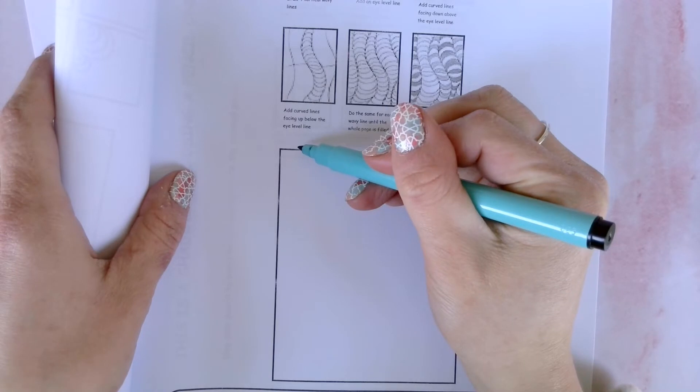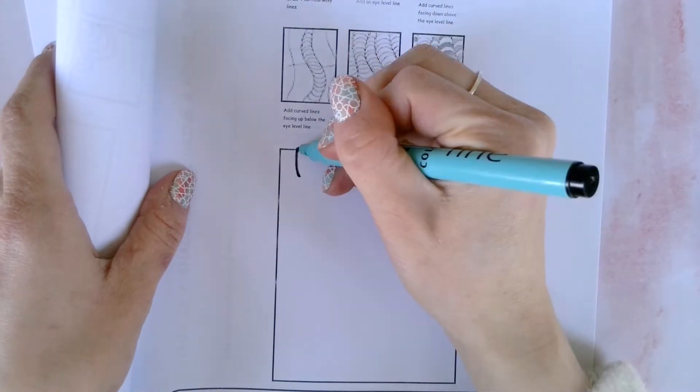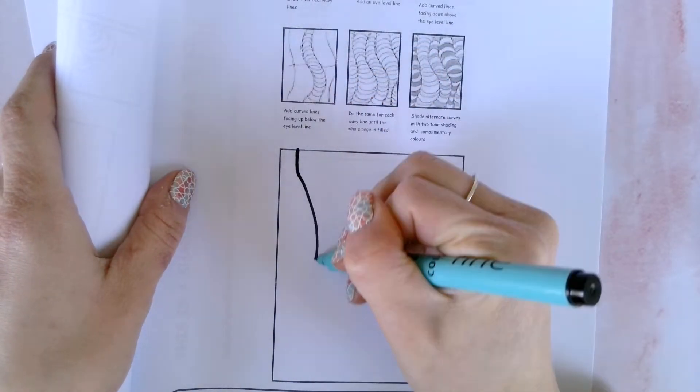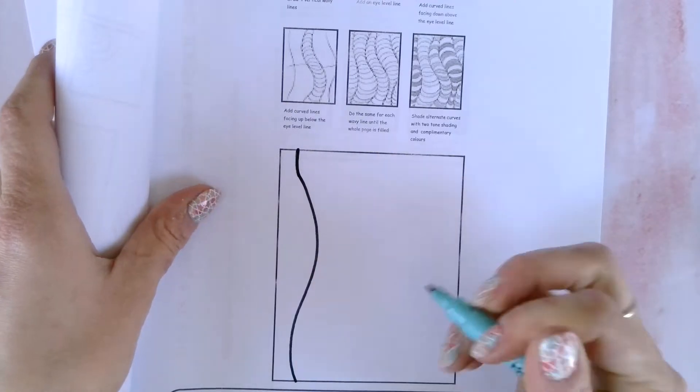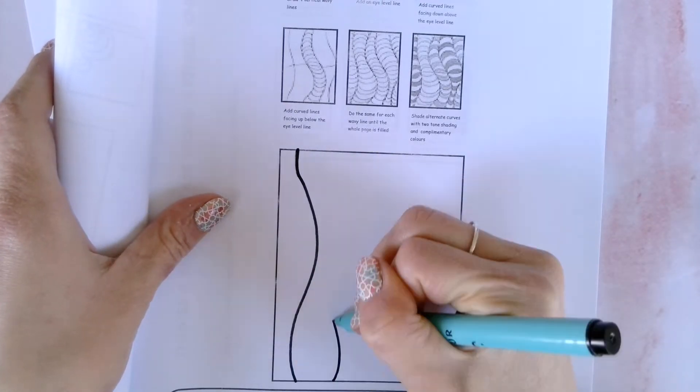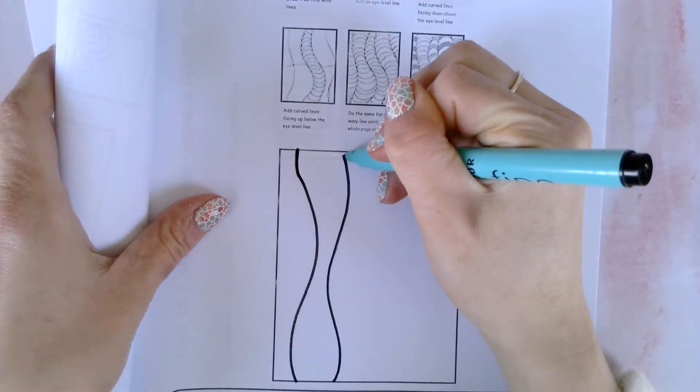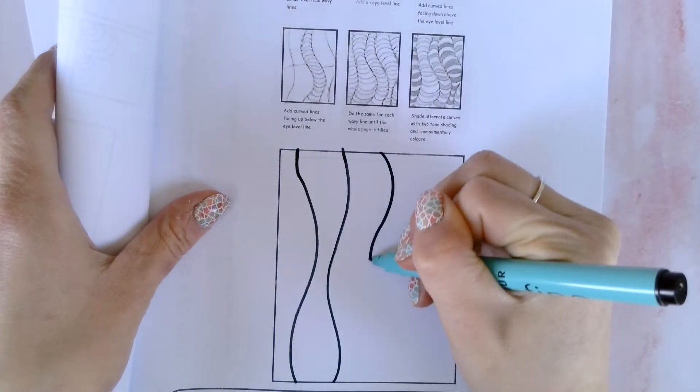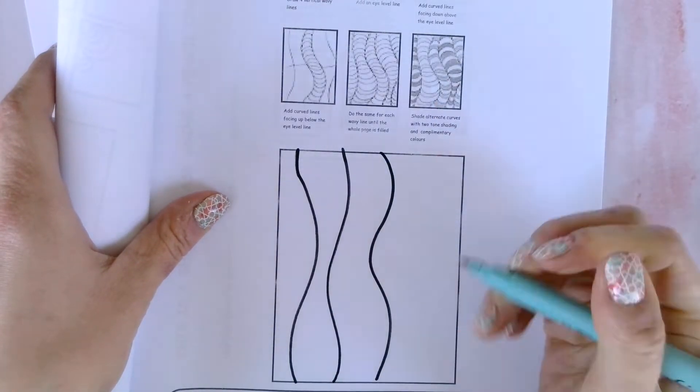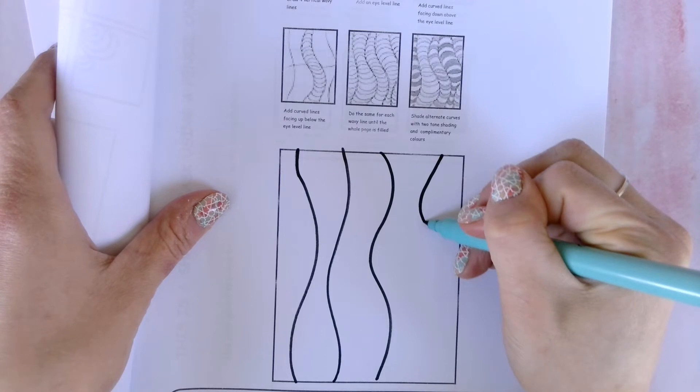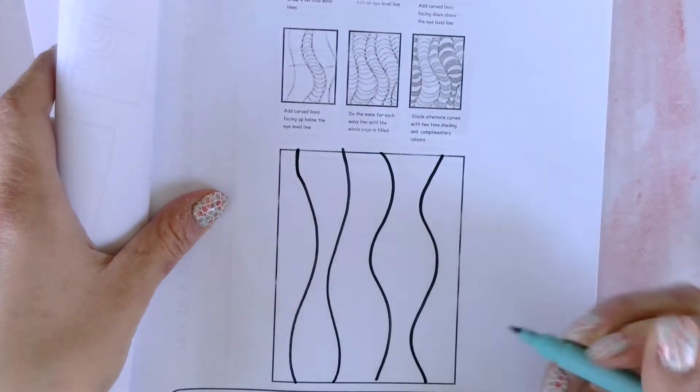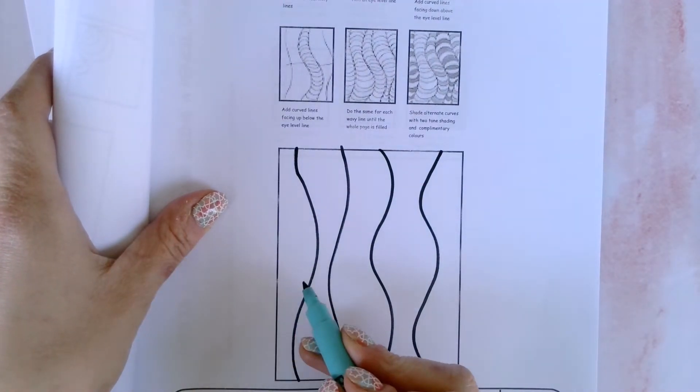So first of all, you draw four vertical lines. I'll make this first example using my black marker, that way you can really see how the technique works. Also, I find that it is actually very effective when you use a marker. So you draw four wavy lines, and then you draw one wavy line across the middle.